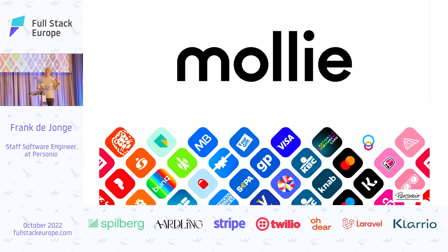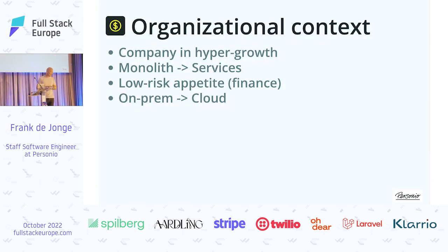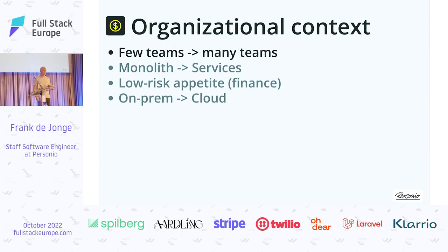This was at Mollie. Before I worked at Personia, I worked at Mollie. Mollie is a fintech — more specifically a payment service provider, so it allows you to do online payments. The organizational context is that the company was in hypergrowth, meaning from a few teams to many teams. For example, Mollie bought a new office and by the time they moved in, the office was already too small. The original system was a monolith with a high level of internal consistency — everything wrapped in one database transaction, all nice inside that transactional boundary.